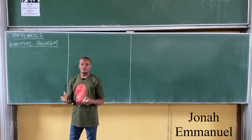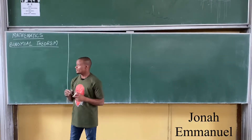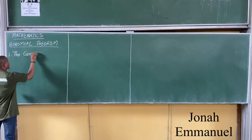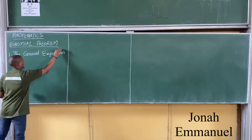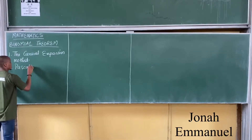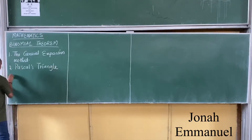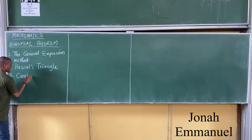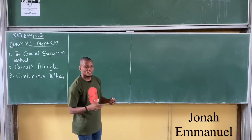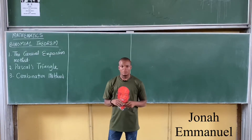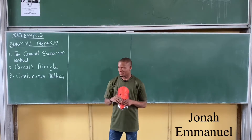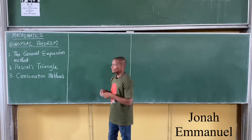When it comes to solving problems involving binomial expansion, there are three major ways. Number one: the general expansion method. Number two: Pascal's Triangle. Number three: the combination method. These are the three methods that aid us in doing expansion of several terms, whether adding or subtracting, raised to a particular index, whether it's a real number or a fraction.